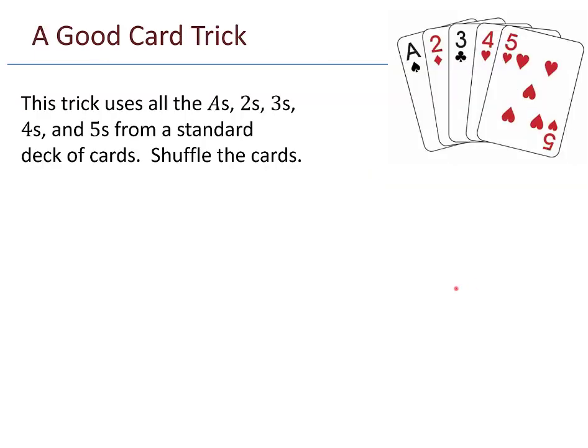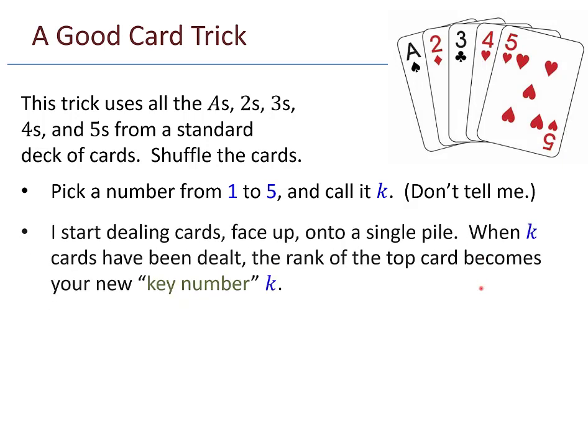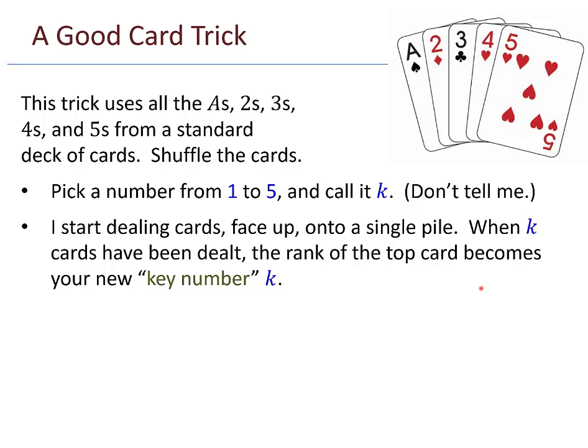Here's a good card trick that has to do with functions like this. This trick uses all the aces, twos, threes, fours, and fives from a standard deck of cards. You can throw away all the other cards for now. You take all those cards and shuffle them together. I'm the magician, and I tell you, you pick a number from 1 to 5 and call it K. But don't tell me. I'm the magician, so you keep your number K secret.